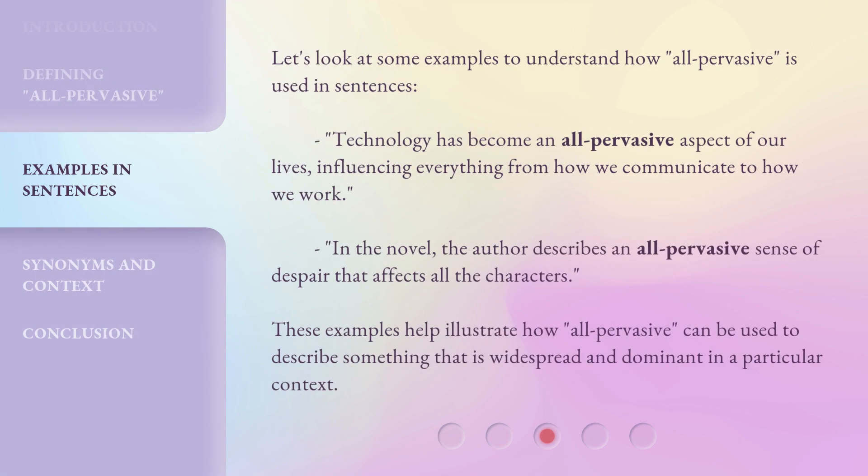Let's look at some examples to understand how all-pervasive is used in sentences. Technology has become an all-pervasive aspect of our lives, influencing everything from how we communicate to how we work. In the novel, the author describes an all-pervasive sense of despair that affects all the characters. These examples help illustrate how all-pervasive can be used to describe something that is widespread and dominant in a particular context.